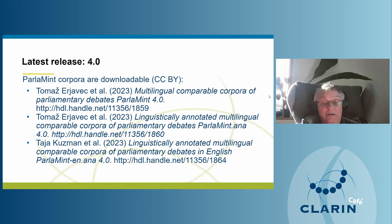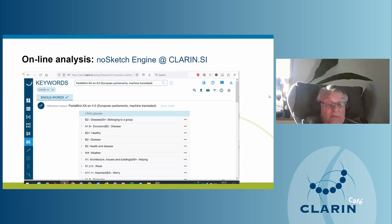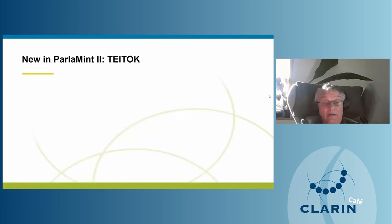The latest release, 4.0, is distributed under the permissive Creative Commons Attribution license. The main ParlaMint corpora have three repository entries: a multilingual comparable corpus (TEI-encoded, non-linguistically annotated text), one with added linguistic information, and a machine-translated one. There are also online analysis options — concordancers at the Slovenian CLARIN node. A slide also shows a TEI-Talk service added in ParlaMint 2, where you can do concordance analysis, browse metadata, or read transcripts like a digital library.